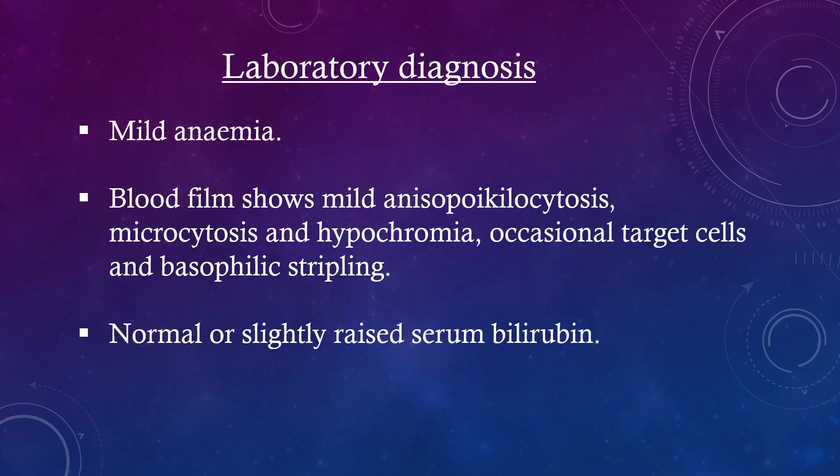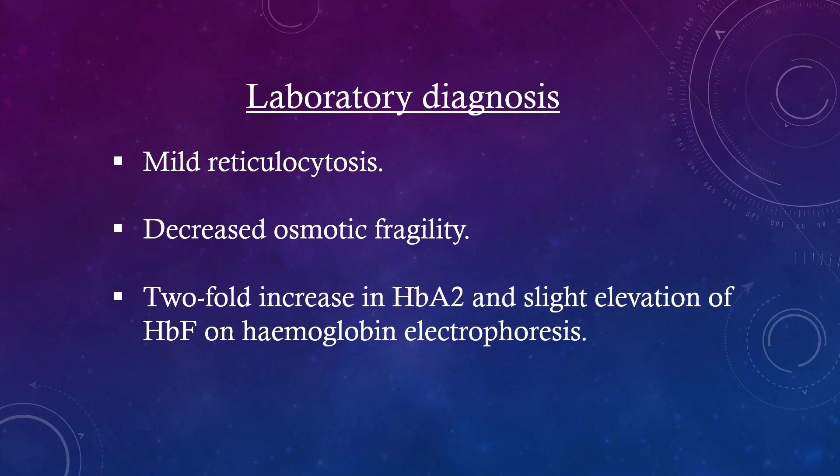Laboratory diagnosis: mild anemia. Blood film shows mild anisopoikilocytosis, microcytosis, and hypochromia; occasional target cells and basophilic stippling. Normal or slightly raised serum bilirubin. Mild reticulocytosis. Decreased osmotic fragility. Two-fold increase in HbA2 and slight elevation of HbF on hemoglobin electrophoresis.